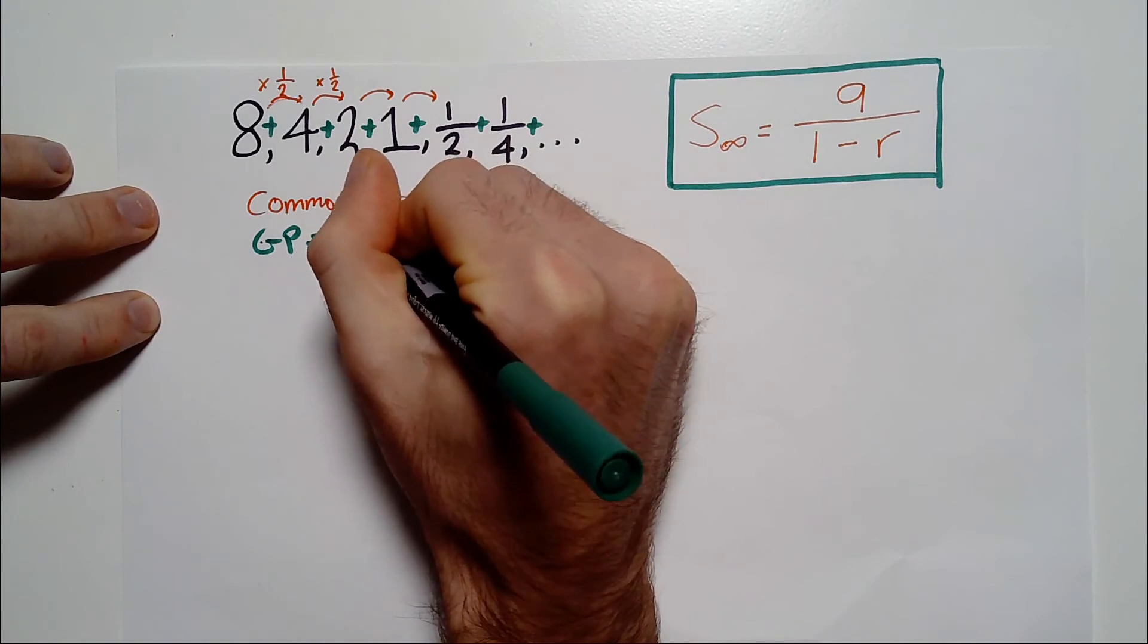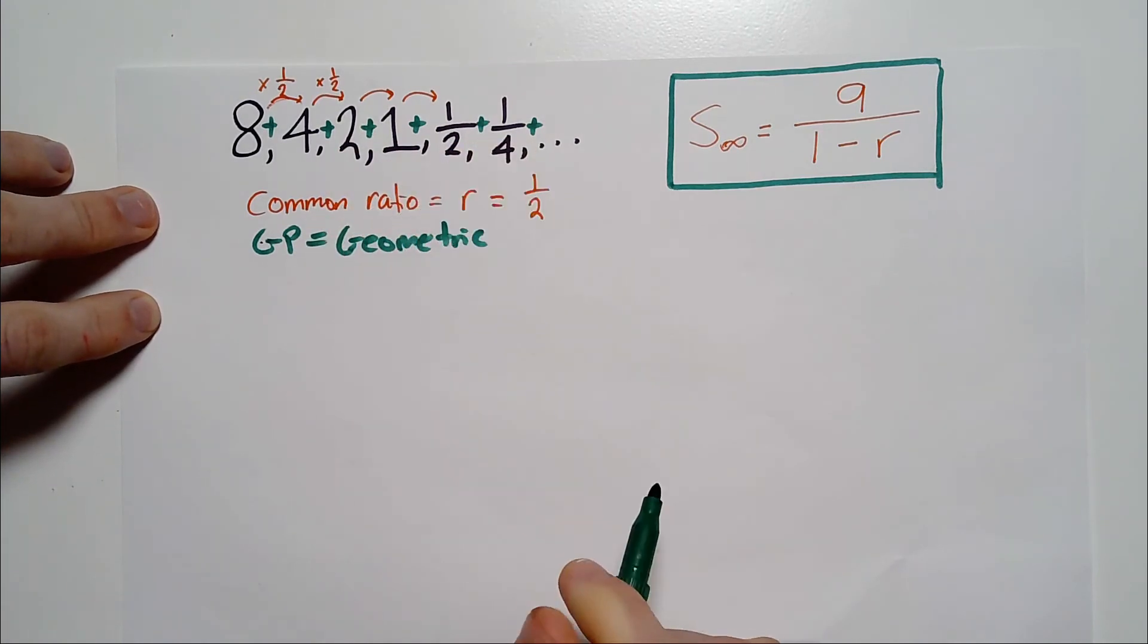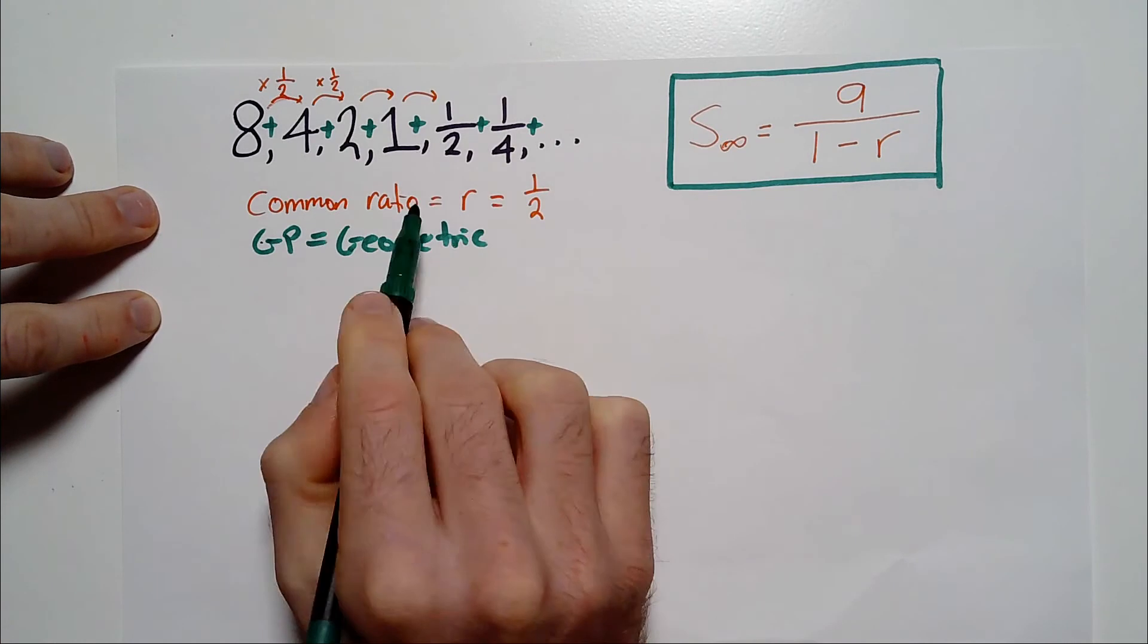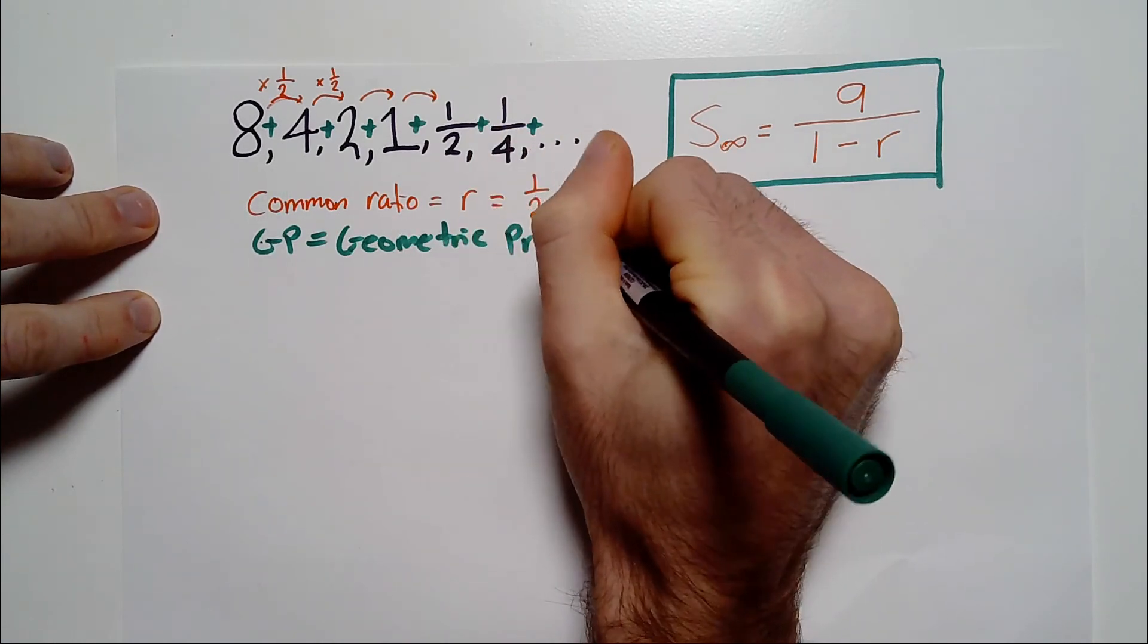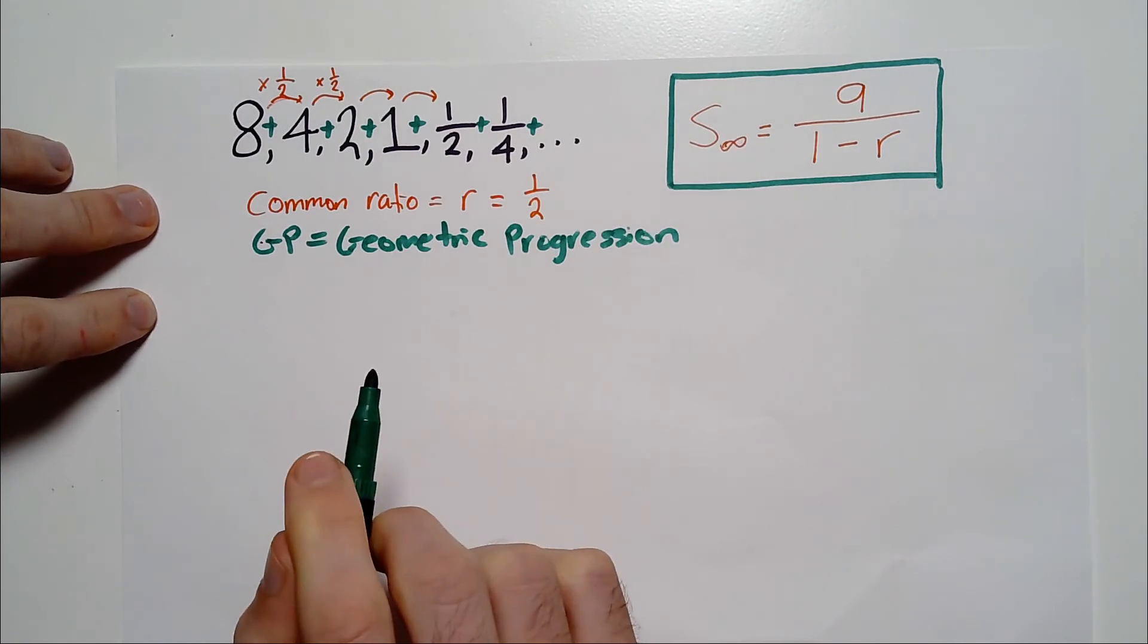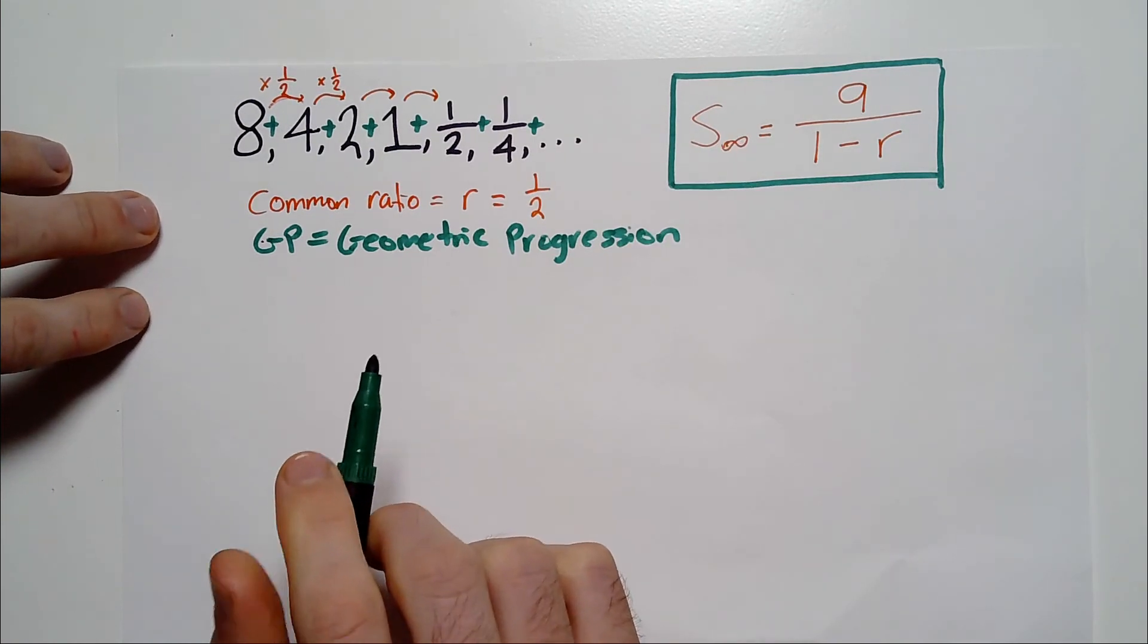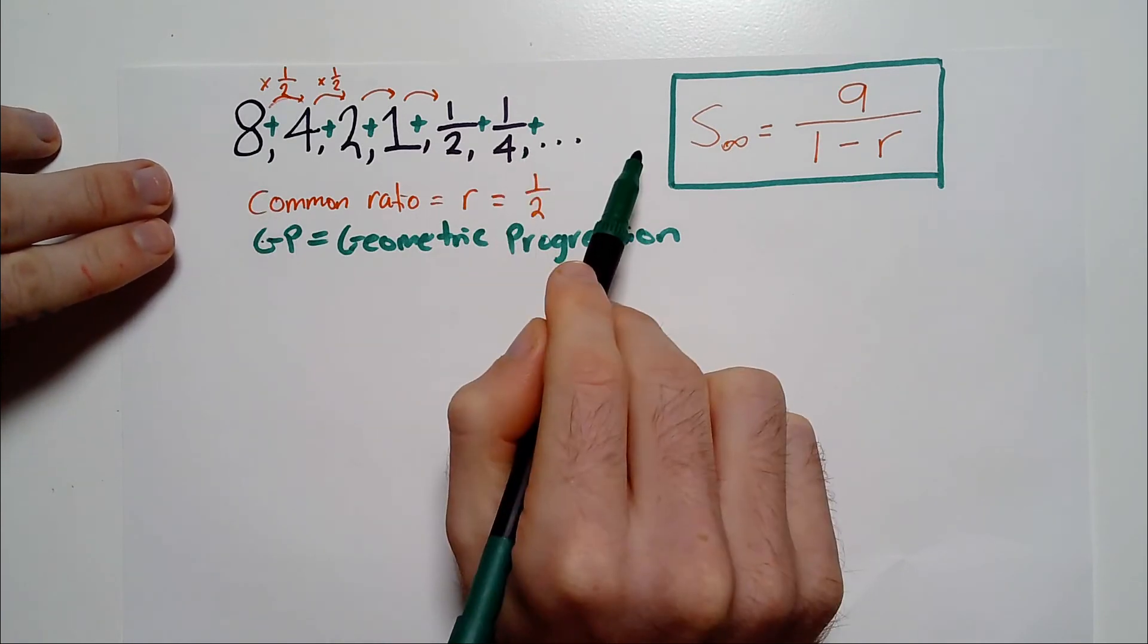This is called a geometric progression or geometric sequence, as some say. So we have a geometric progression. The reason it's a geometric progression is because we have a common ratio between the numbers.